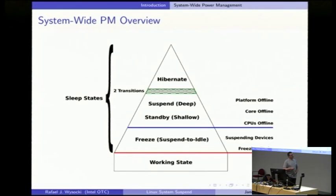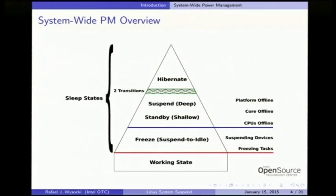On the right-hand side there's a list of operations that have to be carried out to get to each level — for example, for suspend to idle we need to freeze tasks and then suspend devices. These sleep states have been around for quite a while; they were present in the kernel when I started to contribute, more than 10 years ago. Suspend to idle is quite new.